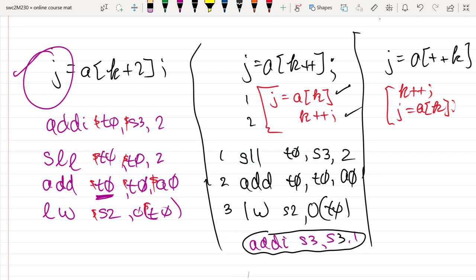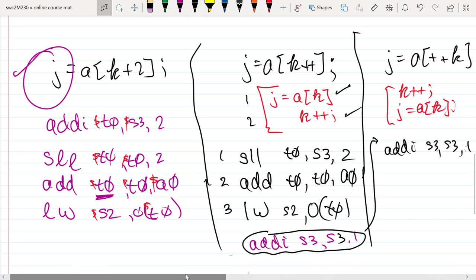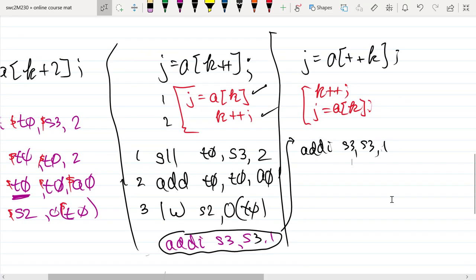Finally, let's see this last one. So let's go ahead and take this guy here, where we increment k by 1. We're going to go ahead and do the same thing, and do it right away before we even try to access a sub k. So it's going to be an add i, S3, S3, 1. So k equals k plus 1.